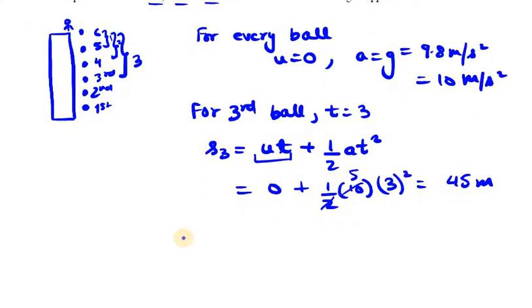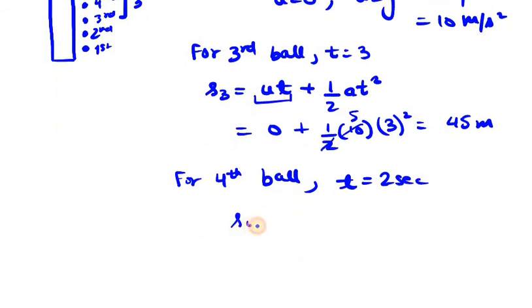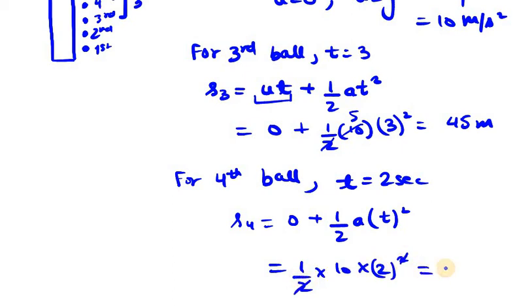Now we need to find for the fourth ball. Fourth ball is taking time as 2 seconds. So it will be S4 equals 0 plus half into a into t square. So half into 10 into t, t is 2 square here. So 2 and 2 gets cancelled out here, so we are left with 20. So it is 20 meters.